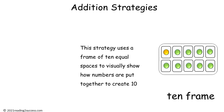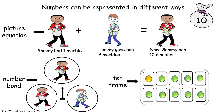In this video, we're going to introduce kids to the third strategy: 10 frames. It uses a frame of 10 equal spaces to visually show how numbers are put together to create 10. In this example, all three strategies visually demonstrate that 1 plus 9 equals 10. Sammy had 1 marble, Tommy gave him 9 marbles, and now Sammy has 10 marbles. 1 marble plus 9 marbles equals 10 marbles.